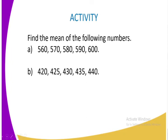You are now going to have the following activity, whereby you are required to find the mean of the following numbers. Activity A has numbers: 560, 570, 580, 590, and 600. Follow the procedure we have done and you will arrive at the correct answer. You also have activity B, where you are required to get the mean as well.